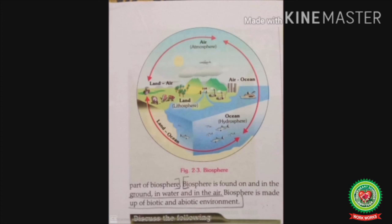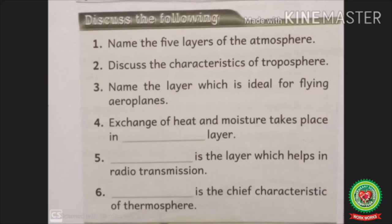Discuss the following: name the five layers of atmosphere; discuss the characteristics of the troposphere; name the layer which is ideal for flying aeroplanes; exchange of heat and moisture takes place in the dash layer; dash is the layer which helps in radio traffic; dash is the chief characteristic of the thermosphere.